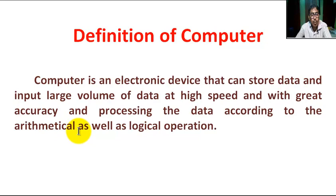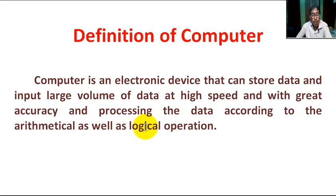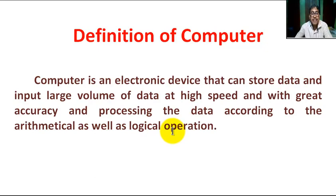Processing is done according to arithmetical as well as logical operations. Arithmetical operations include addition, subtraction, multiplication, division, and square root. Logical operations include arranging data in ascending or descending order, finding the highest or lowest data, or testing whether a certain relationship between data is true or false.